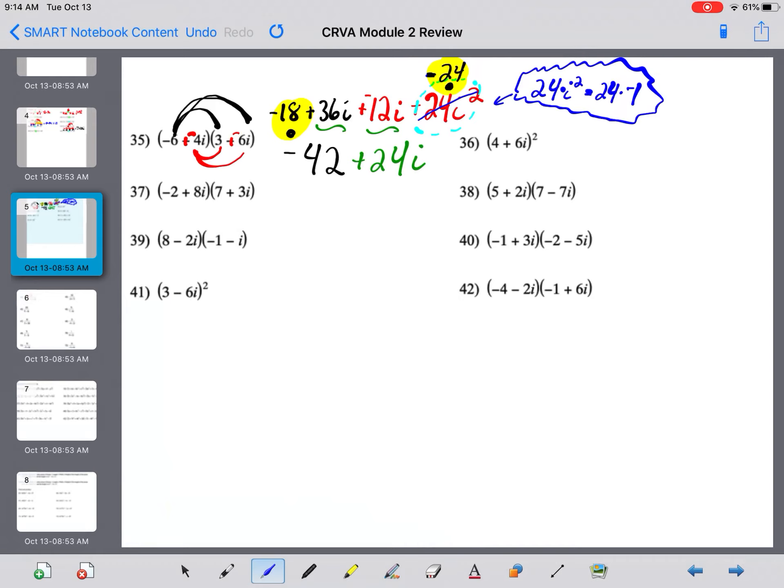All right, let's try, I'm going to try number 38. So, distribute the 5 through. You get 35 and a negative 35i. Let's distribute the 2 through. You get 14i and negative 14i squared.